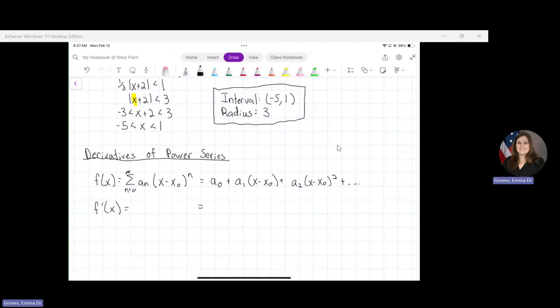So when I take my derivative, what am I going to get? We're reducing the degree, so this a_0 is going to go away. The derivative of a constant is zero, so I'm just going to have a_1 as my new constant term plus 2a_2(x - x_0) plus 3a_3(x - x_0) squared, etc.